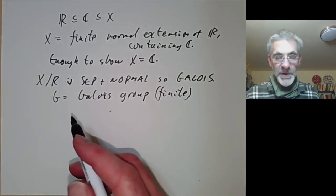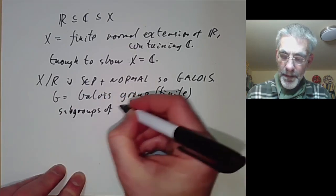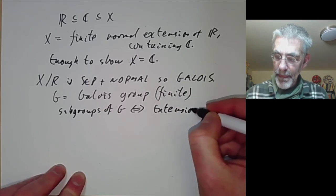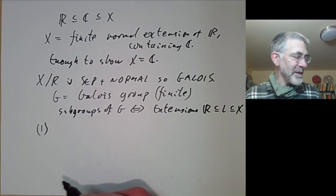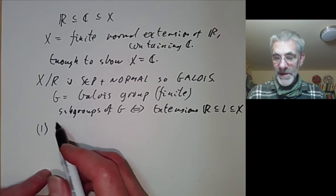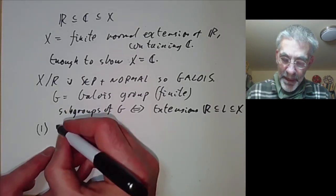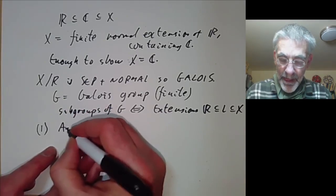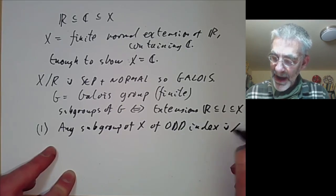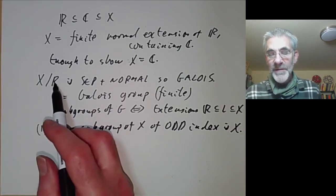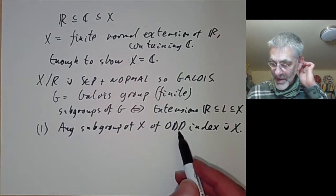Now the idea is to translate our two conditions into conditions about the Galois group G. We know subgroups of G correspond to extensions R contained L contained X between R and X. Our first assumption said that any polynomial of odd degree has a root. In other words, there are no extensions of R of odd degree apart from the trivial ones. So this says that any subgroup of X of odd index is just X. Because an extension of odd degree of R corresponds to a subgroup of odd index. You remember the degree of the extension over R is actually the index of the corresponding subgroup, not the order of the subgroup.